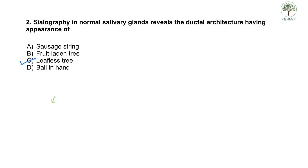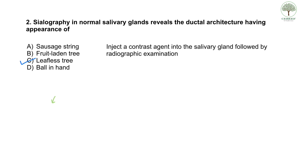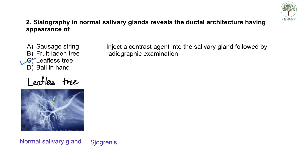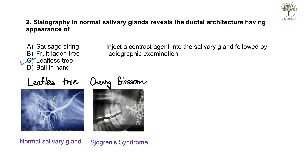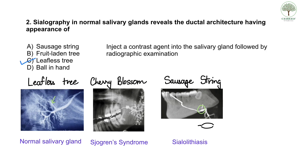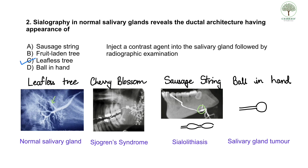Sialography is a technique which involves injection of a radiocontrast agent into the salivary ductal structure followed by radiographic examination. Normal parotid glands show the appearance of a leafless tree, as you can see in this picture. In Sjögren's syndrome, you get a characteristic appearance of a fruit laden tree or cherry blossom tree. In sialolithiasis, when the duct is obstructed with numerous strictures, you get the classic sausage string appearance, and the ball in hand appearance is seen in salivary gland tumors.